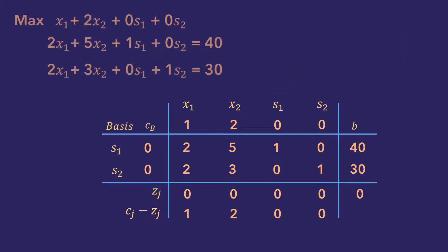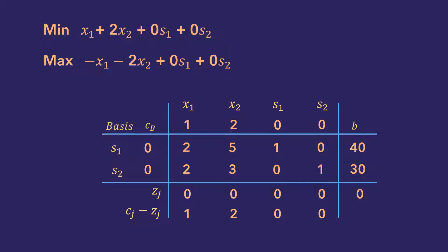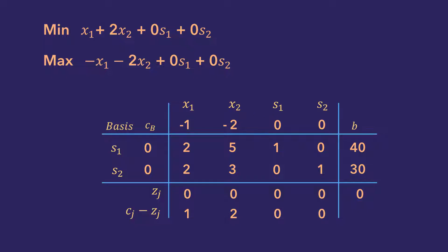Now, suppose this were a minimization problem. We could convert it to a maximization problem by multiplying the objective function by minus 1, and that is reflected in the cj row here. After solving the tableau for the corresponding maximization problem, the final zj value on the right-hand side will also be multiplied by minus 1 to obtain the minimum objective function value.